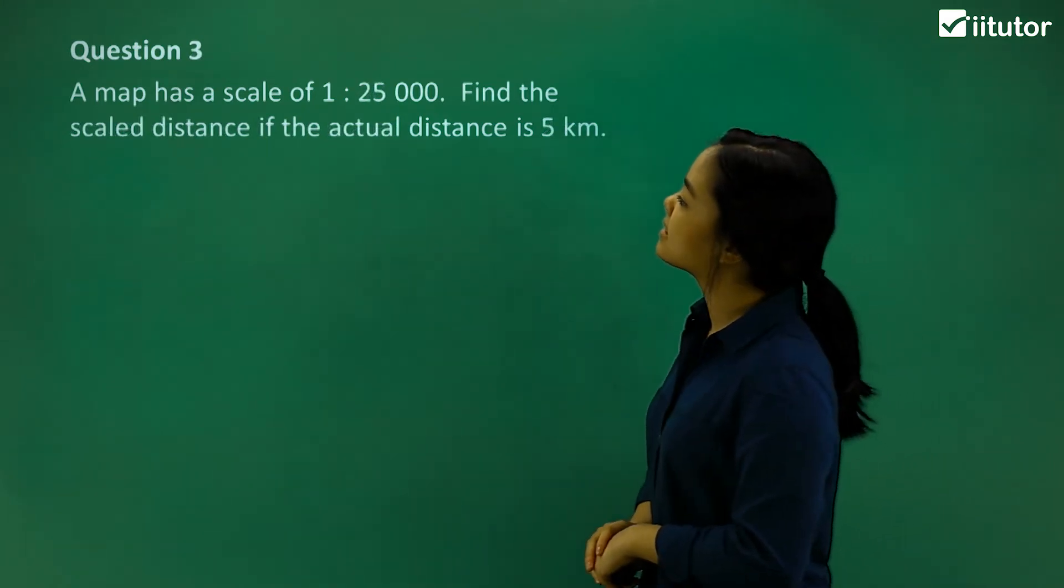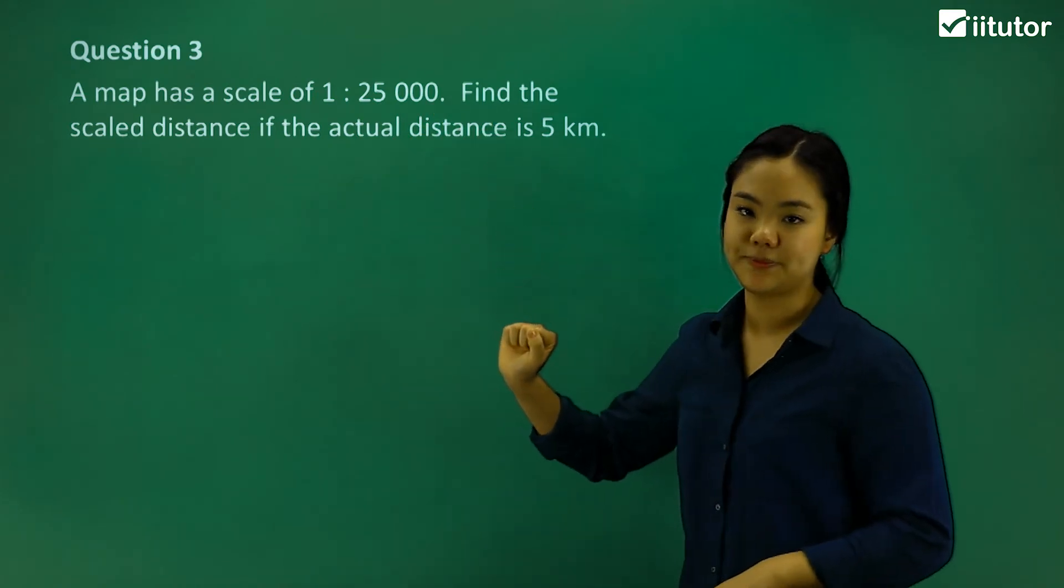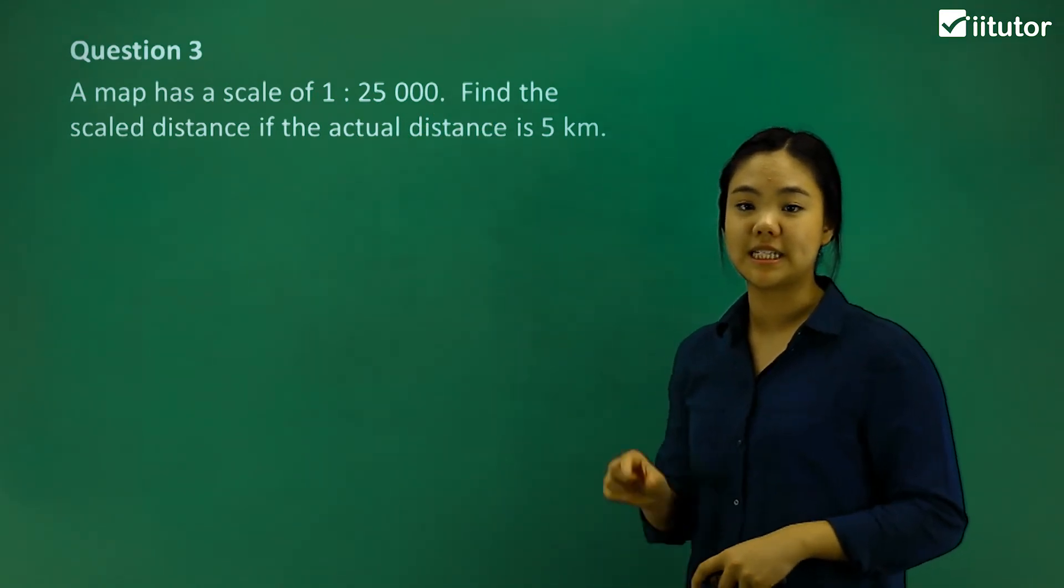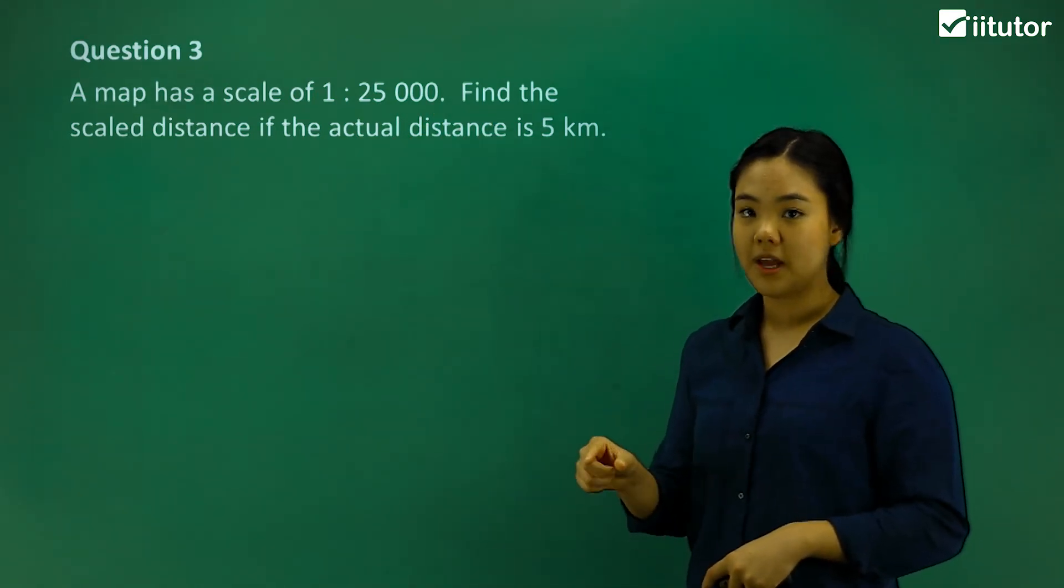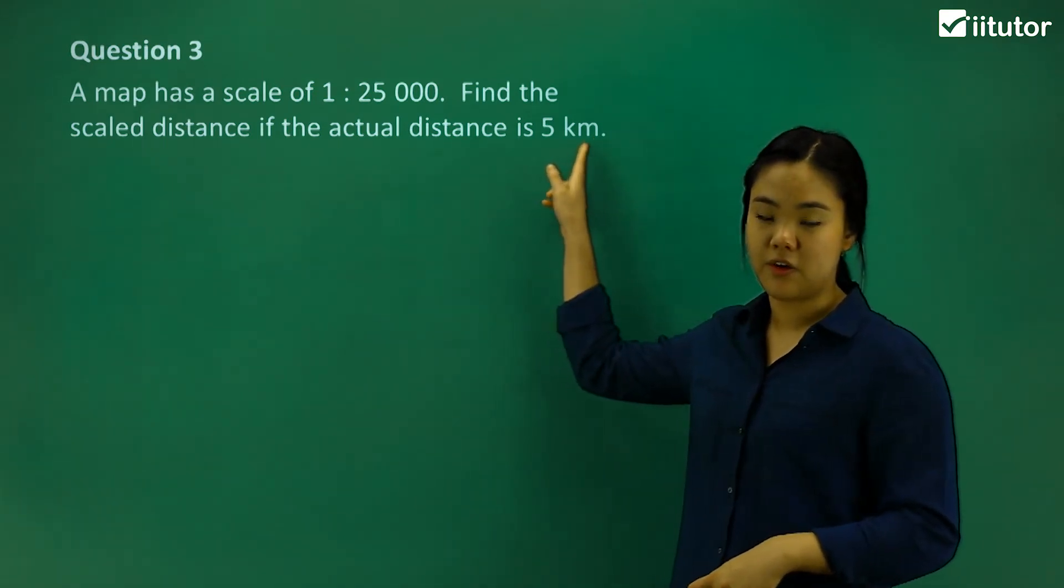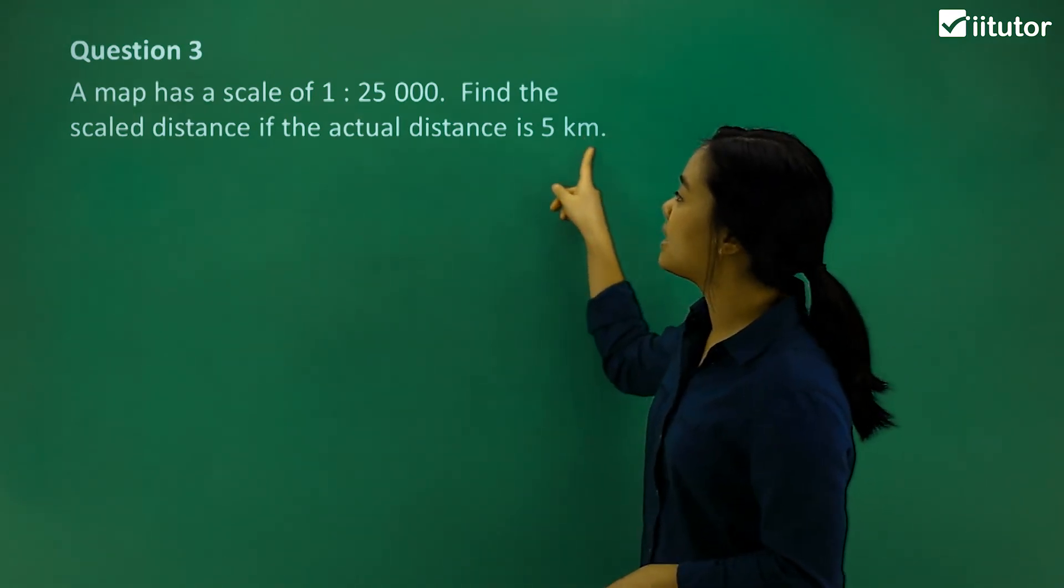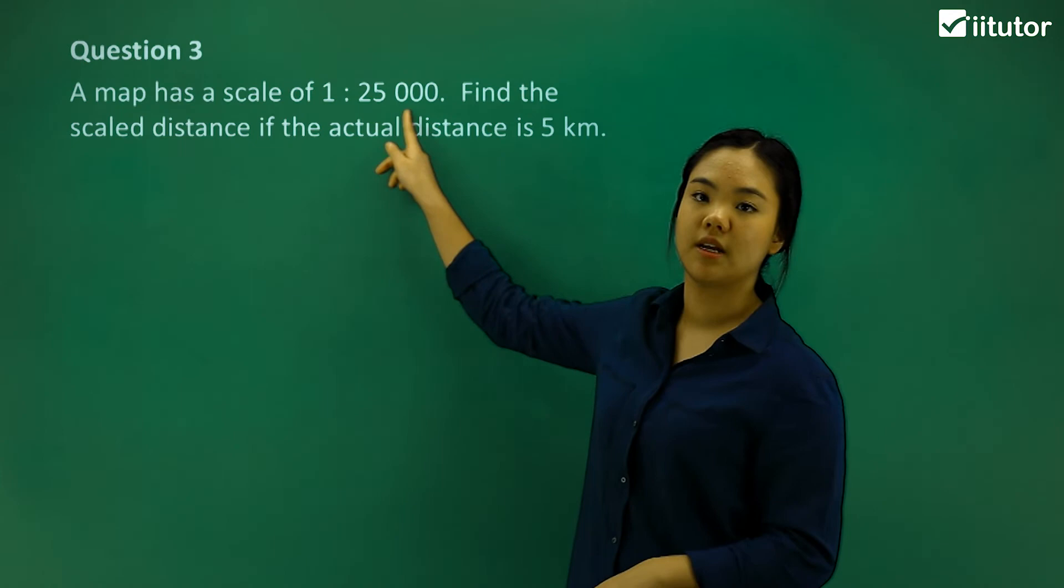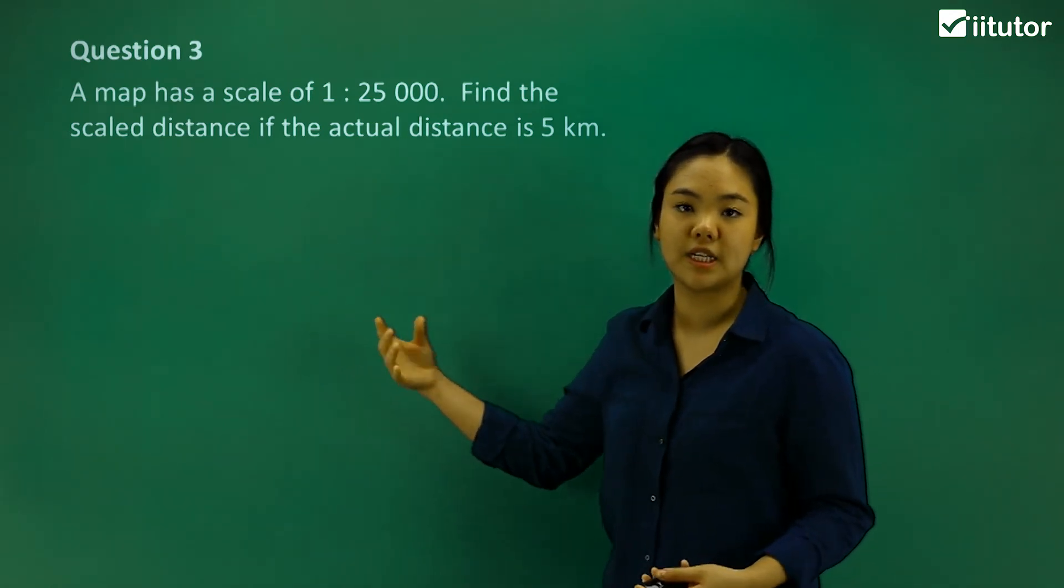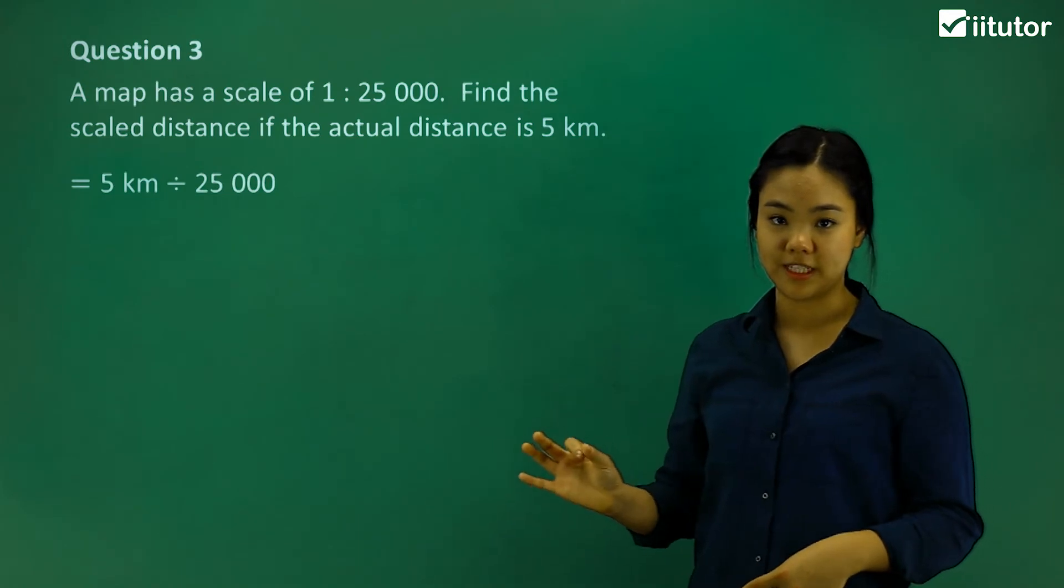Let's try a different question. Question three says, a map has a scale of 1 to 25,000. Find the scale distance if the actual distance is 5 kilometers. We know that 5 kilometers is equivalent to this ratio. So if we want to find 1, we just divide 5 kilometers by 25,000.